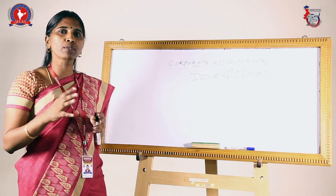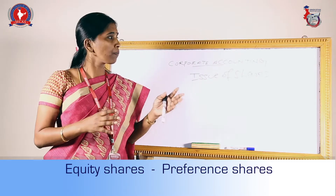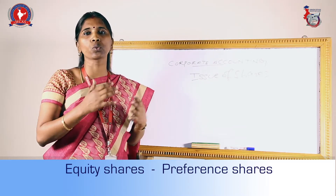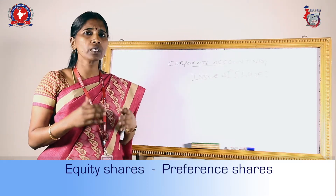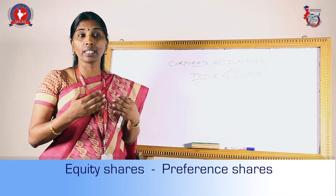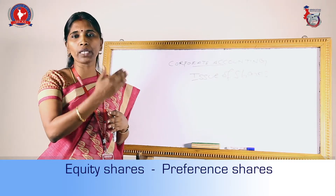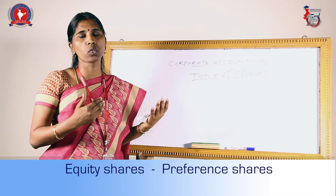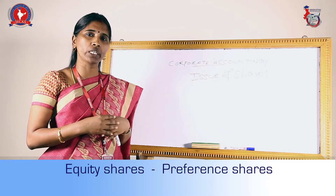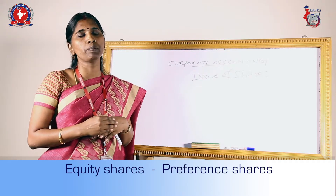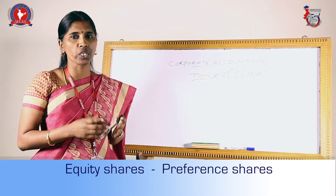In the issue of shares, there are two types of shares. One is called equity shares and another is called preference shares. Preference shares means the first preference is given to those shareholders — two preferential rights are given. One is regarding the dividend; the first dividend will be paid to the preference shareholder and only later will the equity shareholders get the dividend. In case of liquidation, preference shareholders' capital will be returned first, and only if any surplus is left will it go to the equity shareholders.